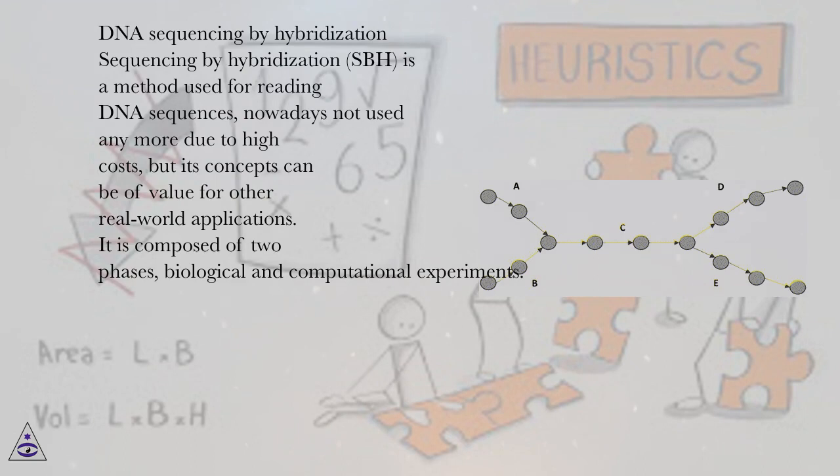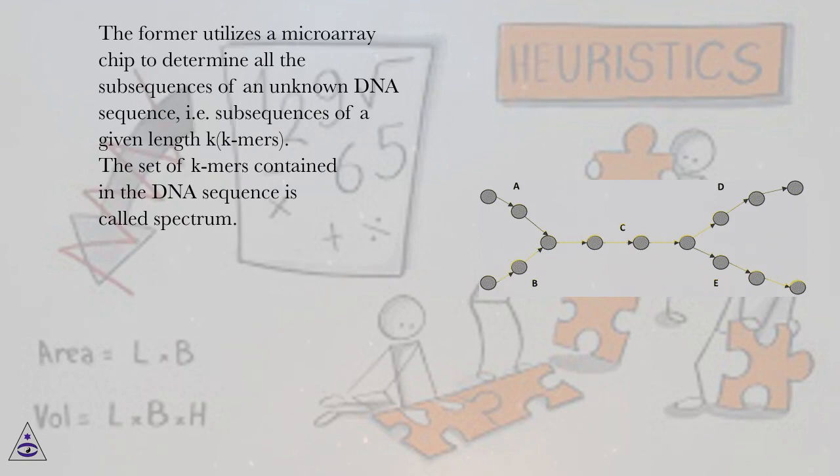It is composed of two phases, biological and computational experiments. The former utilizes a microarray chip to determine all the subsequences of an unknown DNA sequence, i.e. subsequences of a given length k, k-mers. The set of k-mers contained in the DNA sequence is called spectrum.